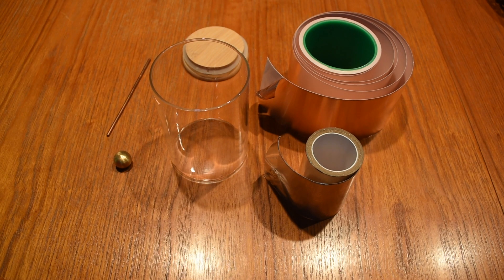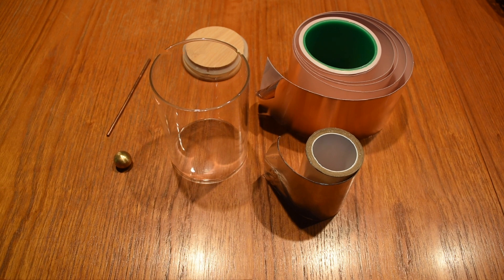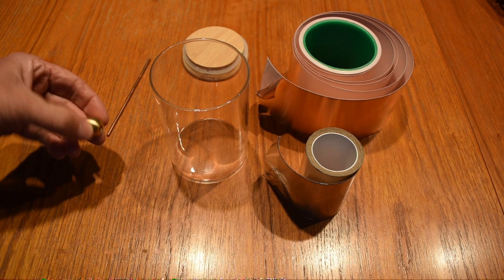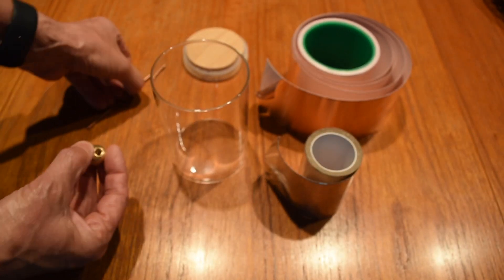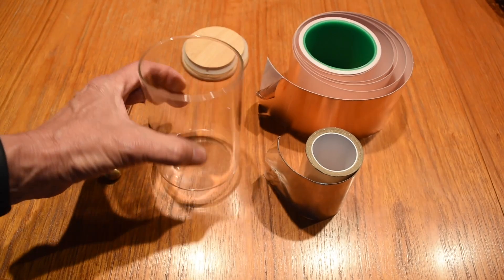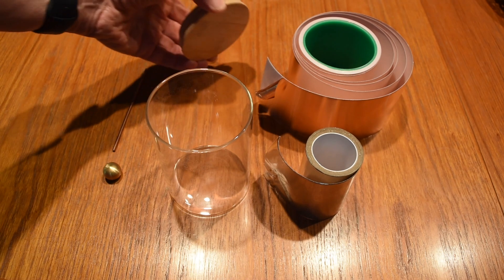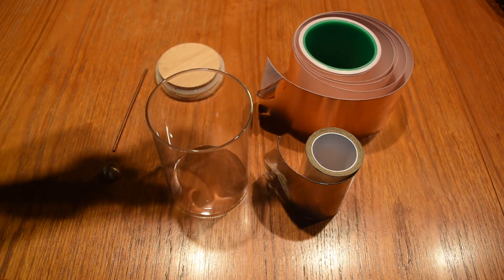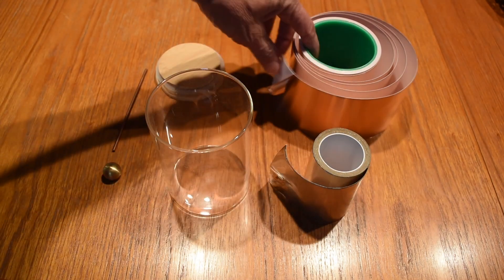Here are the parts I'm going to use to build a Leiden jar. I have a lamp finial, a piece of welding rod, a glass jar that has a wood lid, and I have aluminum and copper tape.